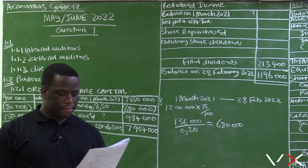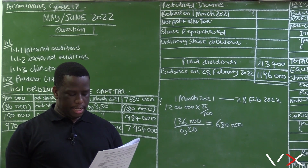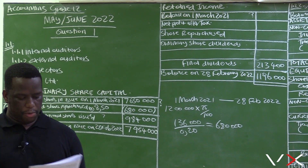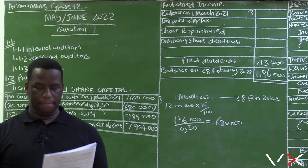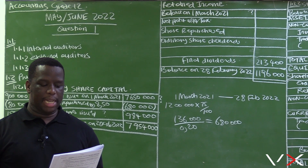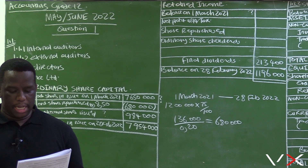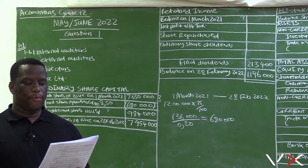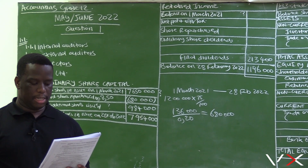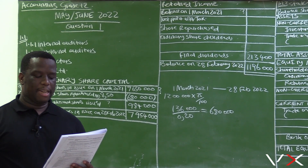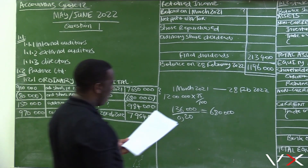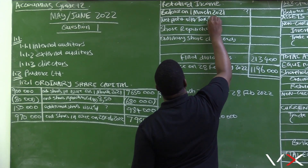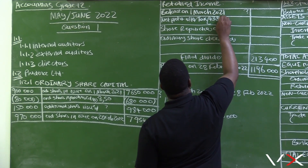On page 5, there is information which talks about tax and about the net profit — that is information C. Information C says income tax for the year, after taking into account all adjustments, amounted to 438,000. That is the income tax, and it is 30% of the net profit.